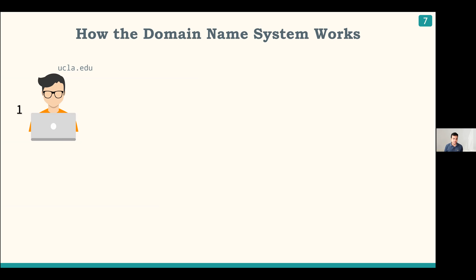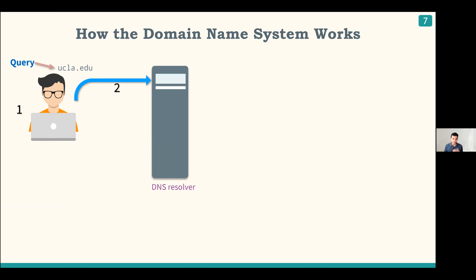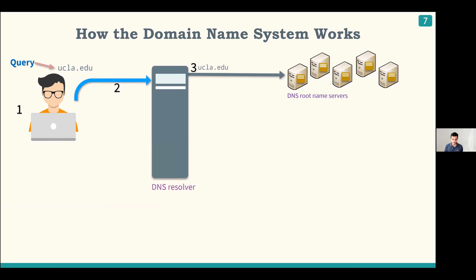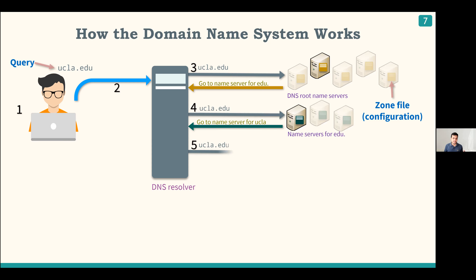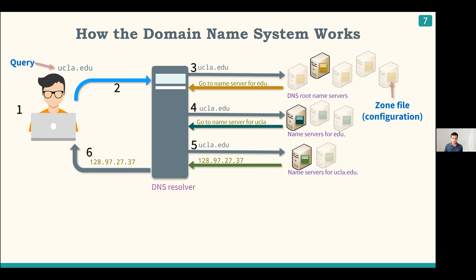Let's say a user is trying to access the UCLA website and sends the query ucla.edu to a local resolver. The resolver starts by sending the query to one of the root name servers. The root name server doesn't know the IP address of ucla.edu but knows how to reach .edu, so it tells the resolver, and the process repeats. Eventually the query reaches the server that has the IP address, which it returns to the resolver, which then returns it to the user.